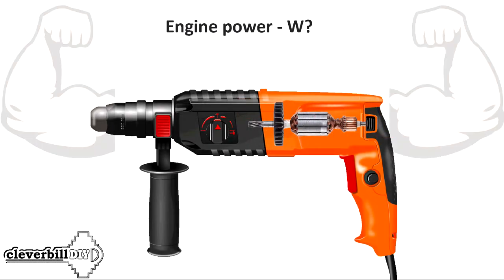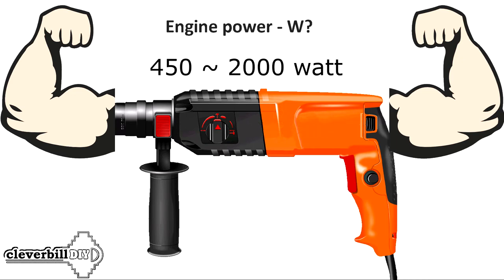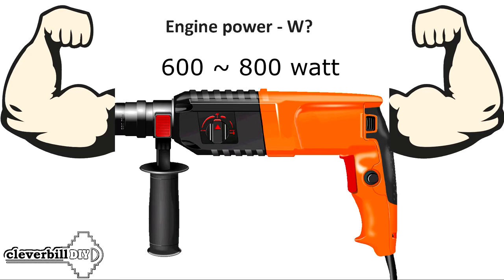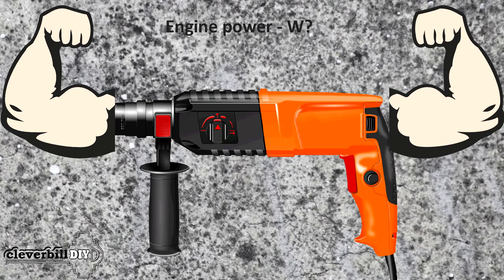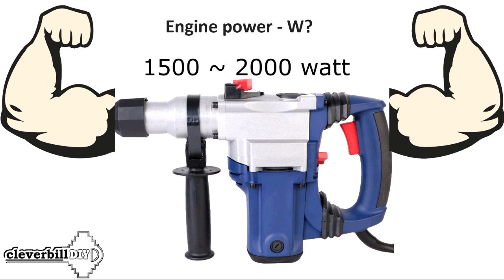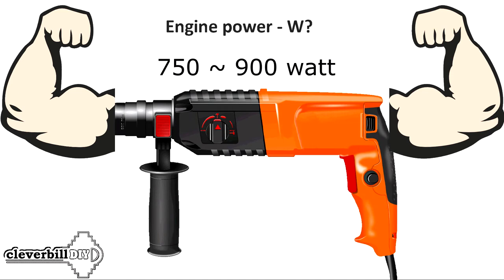Engine power indicates the ability of the machine to work in an intensive mode with a greater load. The power of a hammer drill ranges on average from 450 to 2000 watts. Conventionally, all power tools can be divided into household, up to 900 W, and professional, over 900 W. The most in-demand are tools with a capacity of 600 to 800 watts. For constant intensive use and working with thick walls, you will need 1500 watts or more. For infrequent repairs or construction, 750 to 900 watts is optimal. For occasional use, 550 to 600 watts is sufficient.